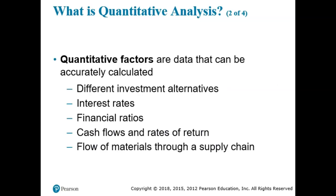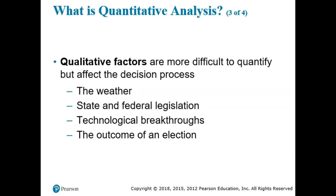Quantitative factors are data that can be accurately calculated: different investment alternatives, interest rates, financial ratios, cash flows, rates of return, and flow of materials through a supply chain. Qualitative factors are more difficult to quantify but they affect the decision process — such things as the weather, state and federal legislation, technological breakthroughs, and the outcome of a presidential or local election.